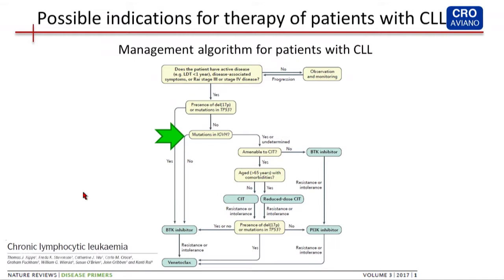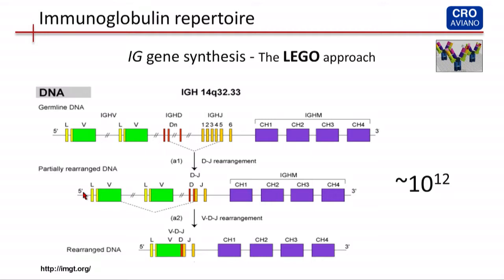For this reason, there is an indication to introduce the IGHV mutational status in the management algorithm for patients with CLL, and to give the new BCR inhibitor not only to the TP53-deranged patient — those with 17p- or TP53 mutation — but also as first-line therapy to the patient with unmutated immunoglobulin. So it's very important to analyze the immunoglobulin.